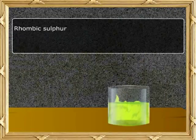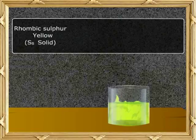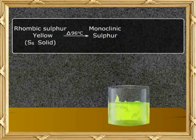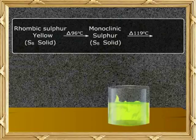To summarise: rhombic sulphur, which is yellow and solid, when heated up to 96 degrees Celsius forms monoclinic sulphur, which is also a solid. When monoclinic sulphur is heated up to 119 degrees Celsius, it forms a pale mobile liquid, which upon quenching gives plastic sulphur.